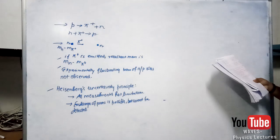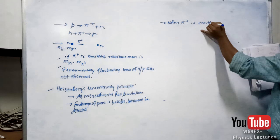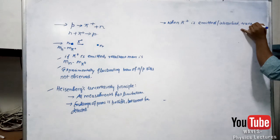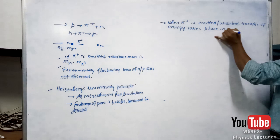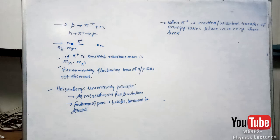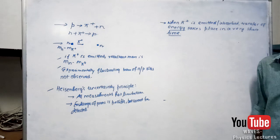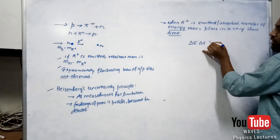When pi-plus is emitted or absorbed, there will be a transfer of energy taking place in a very short time. The speed at which the transfer of energy takes place is the speed of light c — that's why it's relativistic in nature. Since we're dealing with energy and a very short time, Heisenberg's uncertainty principle about energy and time applies: ΔE·Δt ≥ ħ/2.